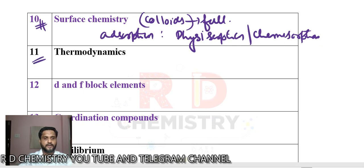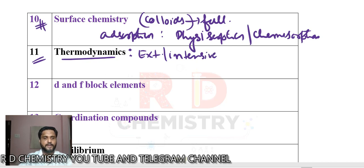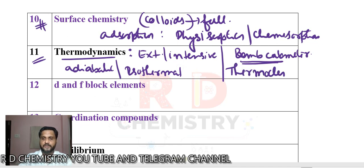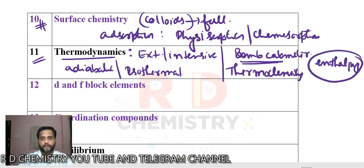On day 11, study thermodynamics. Learn what are extensive properties and intensive properties. Study the different processes: adiabatic, isothermal, and isobaric. Also learn about the bomb calorimeter and its use. Under thermochemistry, learn how to calculate enthalpy of combustion and enthalpy of formation — these are typically three-mark questions in board exams.